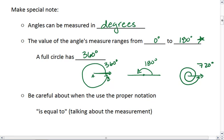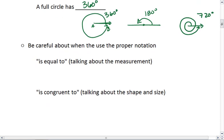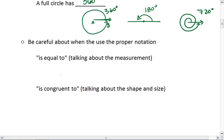And then do be careful when you're using notations with angles. If we use a little M in front, so if we say the measure of angle ABC is equal to the measure of angle XYZ, we're talking about their degrees.